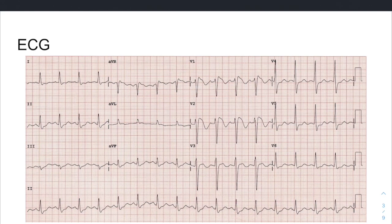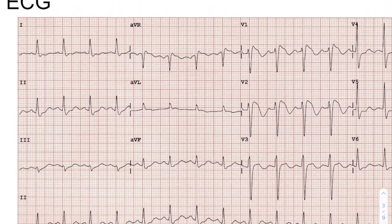Like we've been doing week in, week out, we're going to use the six-step method to interpret this ECG, and then we'll point out some of the interesting findings. We'll start with the rate and use the 300 method here. Picking a QRS complex close to a line, we count the big boxes — one, two, three — to the next R peak, giving us 300 divided by 3, so our rate is about 100 beats per minute.